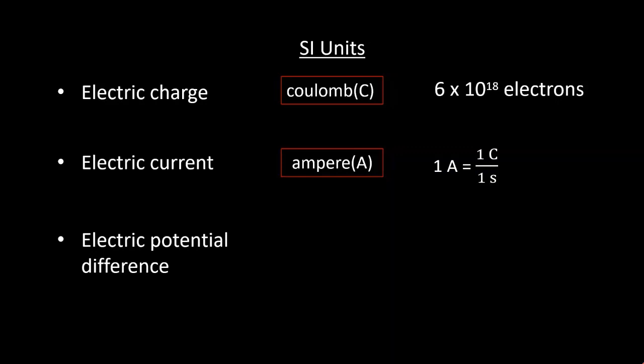The SI unit of electric potential difference is volt. 1 volt is the potential difference between two points in a current carrying conductor when 1 joule of work is done to move a charge of 1 coulomb from one point to the other. Therefore, 1 volt equals 1 joule divided by 1 coulomb.